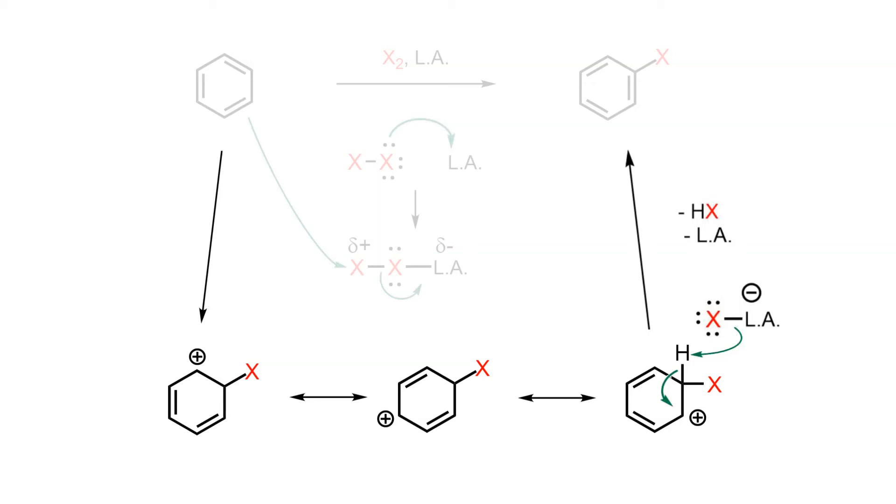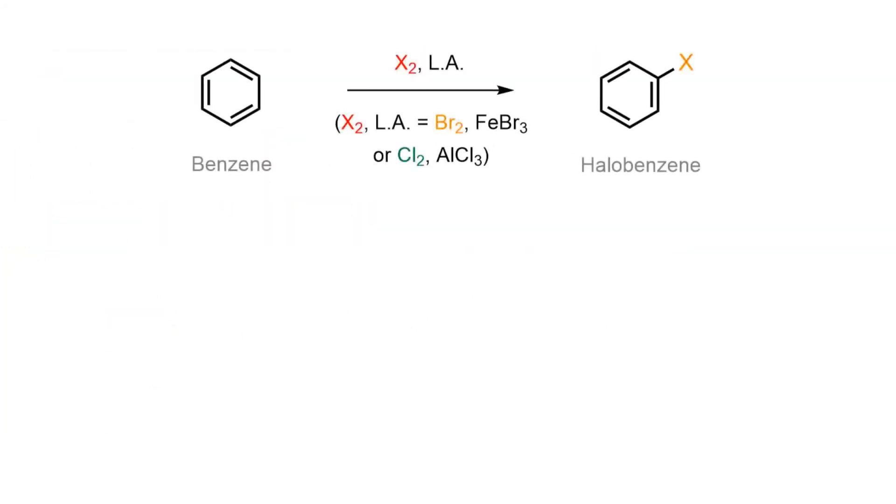Although benzene does not react at an appreciable rate with halogens, it may be induced to react if a Lewis acid is added to the reaction mixture. This makes the electrophile more reactive, which forces the benzene to participate.